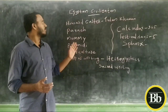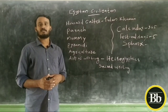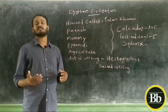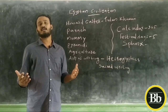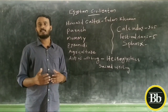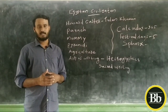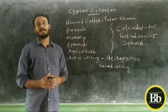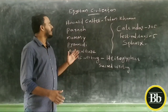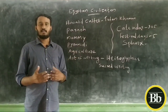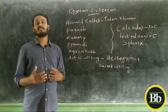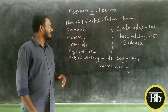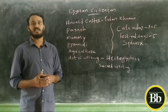In this class, we can discuss about the features of Egyptian civilization. Because in this chapter, we have a very important topic of Egyptian civilization. From the Nile River, this is the first civilization that comes from the Nile River.